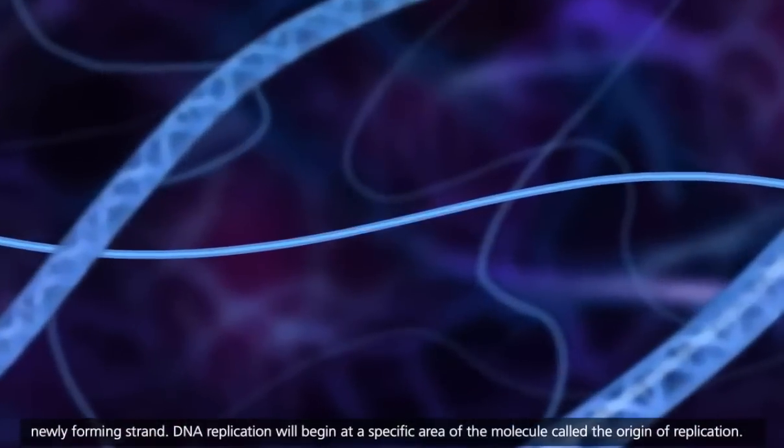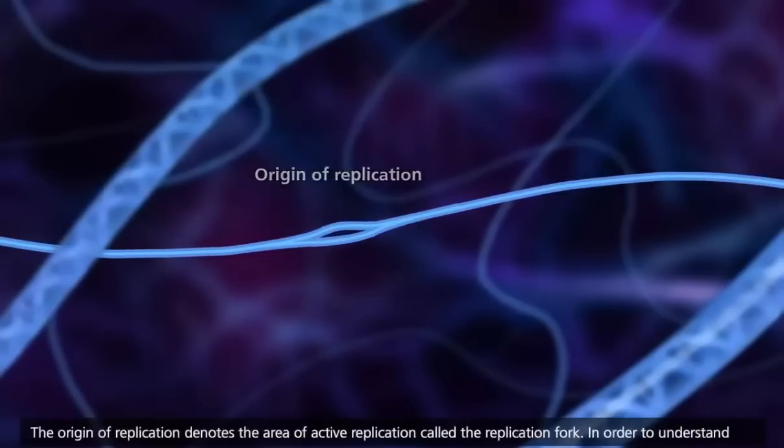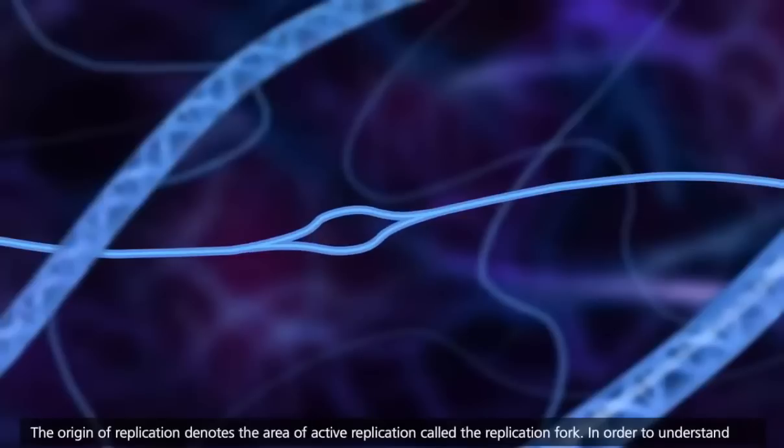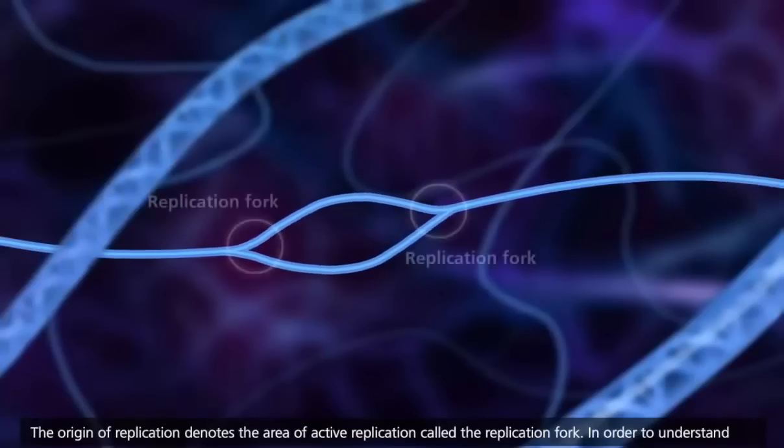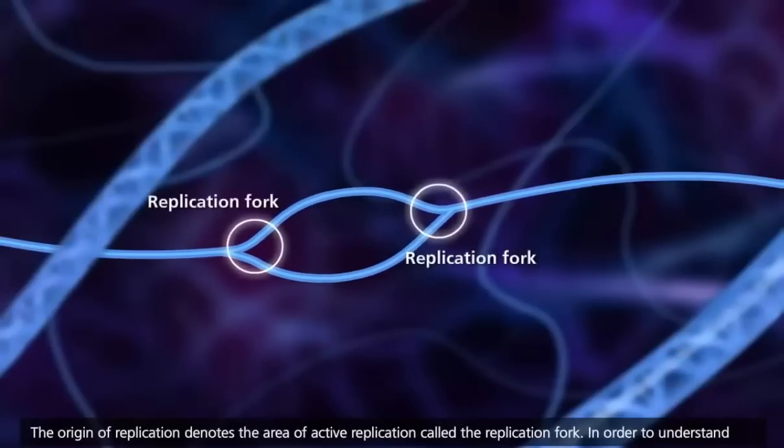DNA replication will begin at a specific area of the molecule called the origin of replication. The origin of replication denotes the area of active replication called the replication fork.